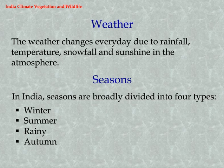Seasons: In India, seasons are broadly divided into four types — Winter, Summer, Rainy, and Autumn.